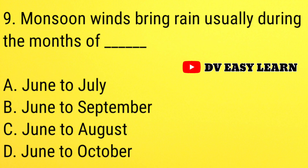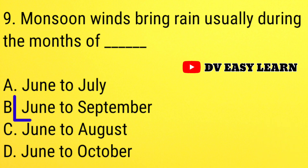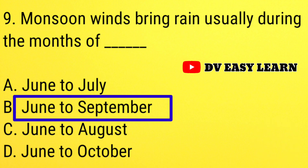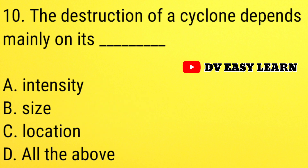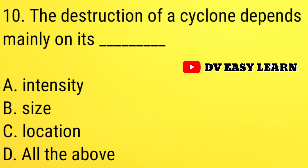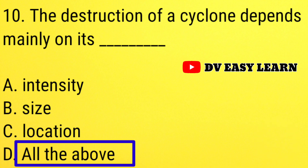Question number 9: monsoon winds bring rain, usually during the months of June to September. Correct answer: June to September. Question number 10: the destruction of a cyclone depends mainly on its — correct answer: all the above — intensity, size and location.